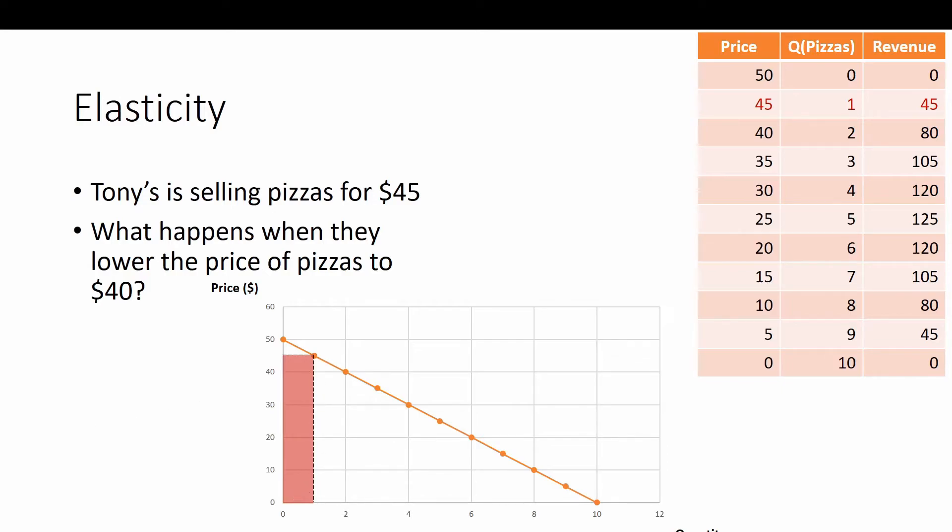We lower the price down to $40. Then we're going to widen out this rectangle. So we have $40. We're going to go all the way over to intersect with our demand curve, and that's at 2. So now we have the area of this rectangle, which is going to be $80, $40 times 2. Or up here, we have a price of $40, quantity 2, and revenue is $80.